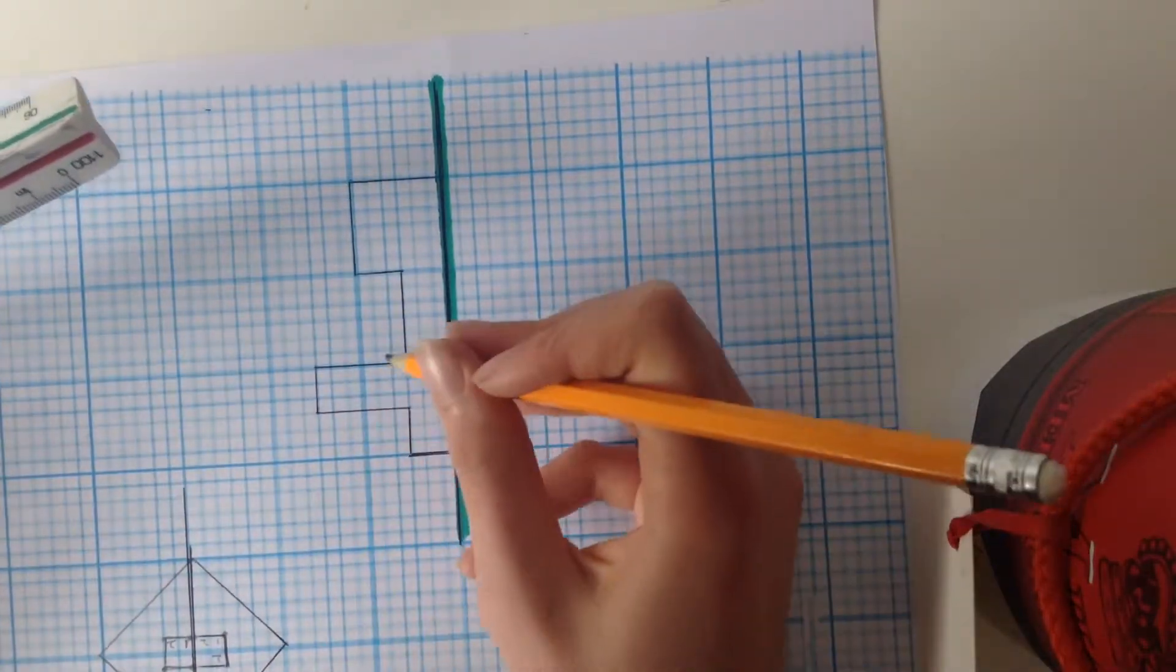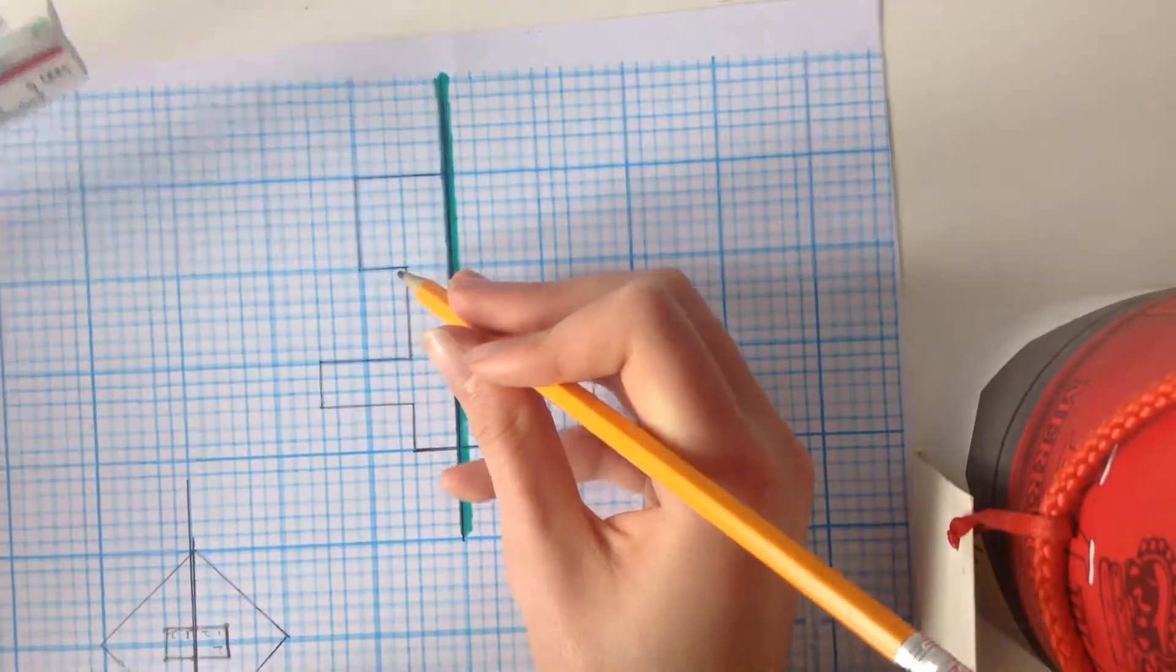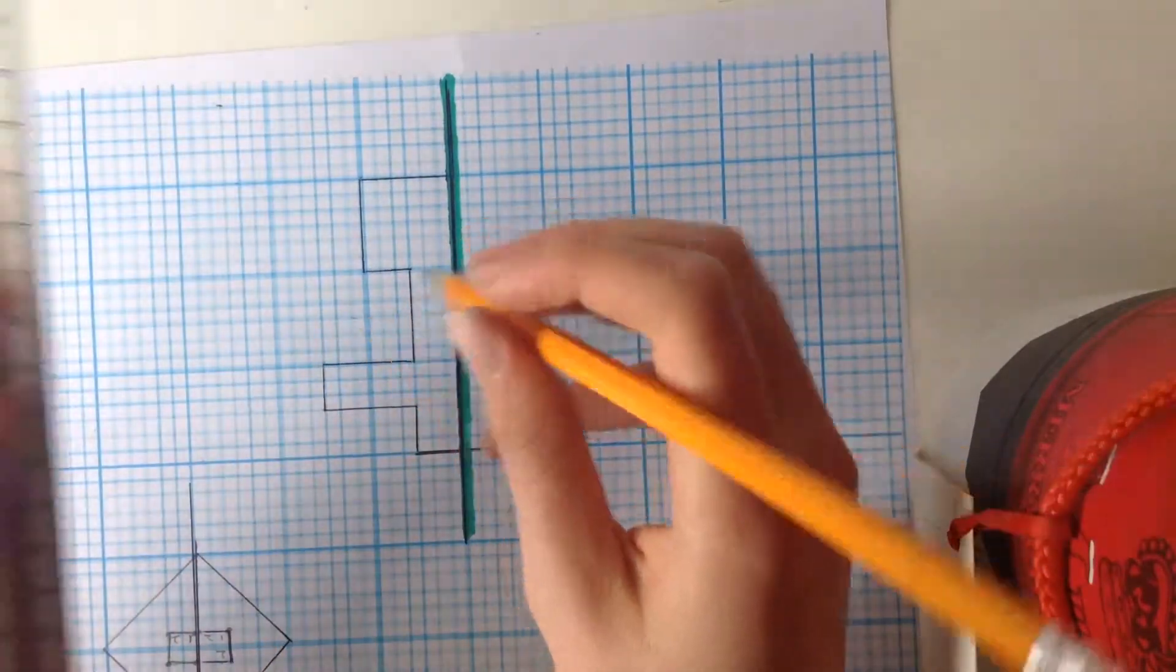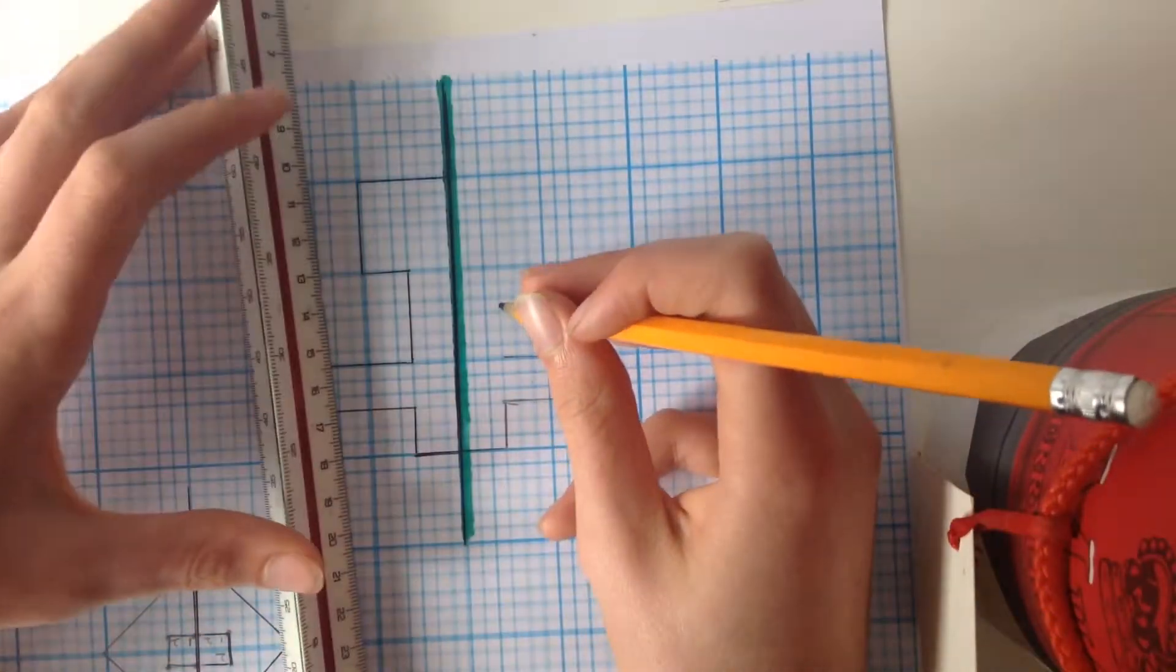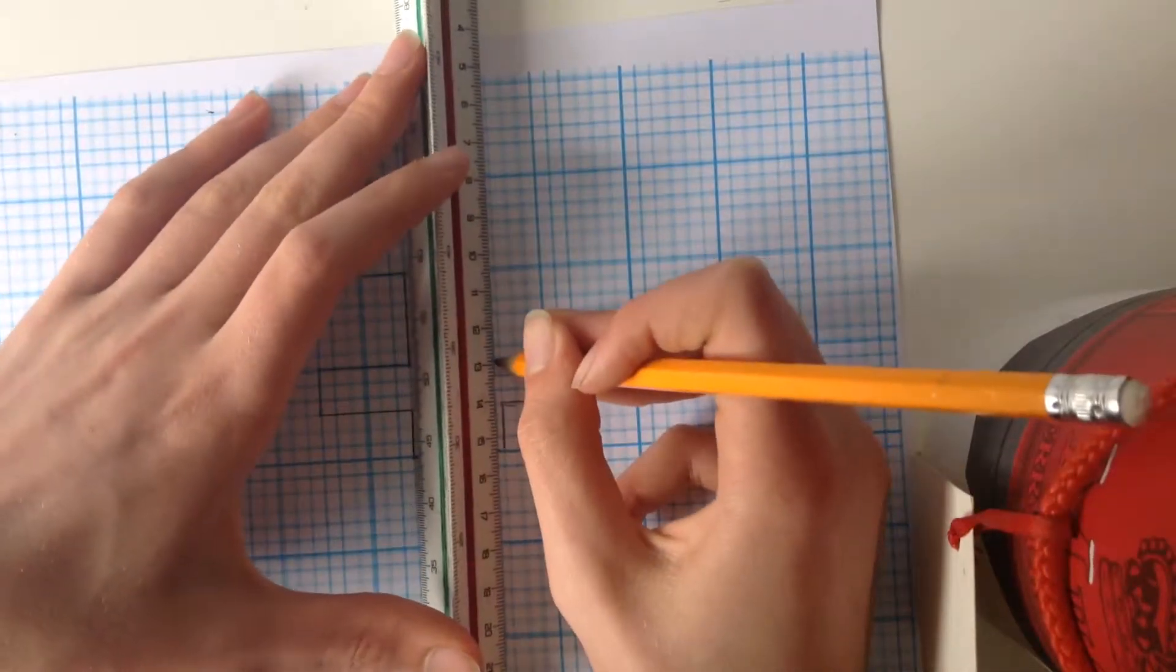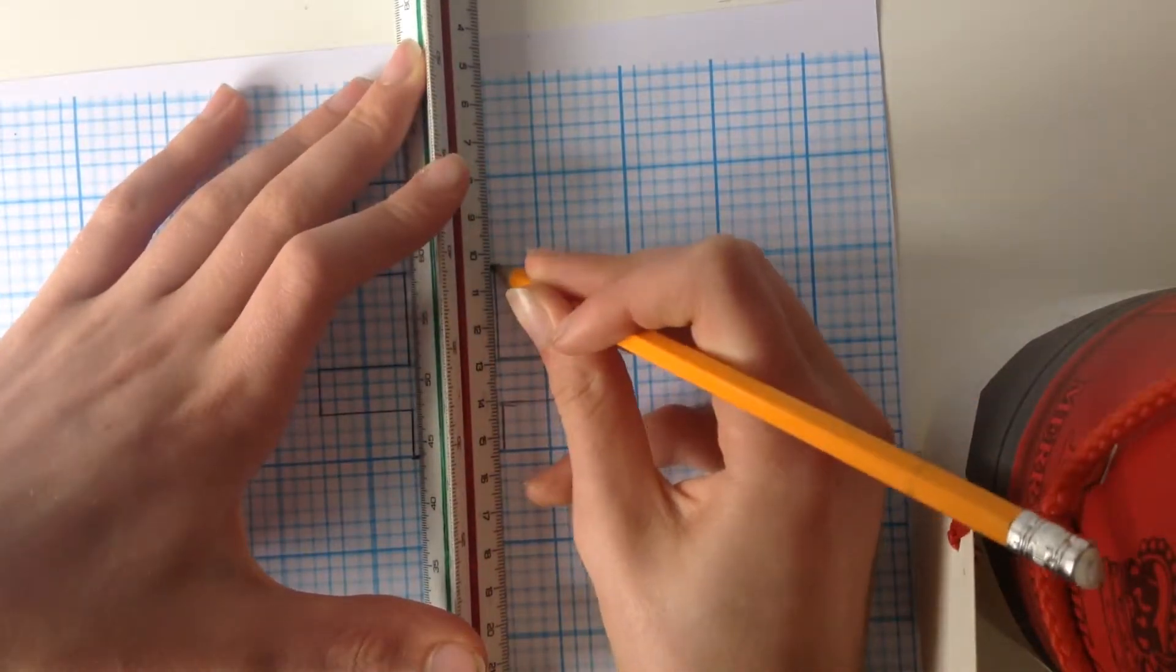And then it goes across here for one, two, three, four, five, six. So, again, or you could just call that a whole square from where you are. It goes up there.